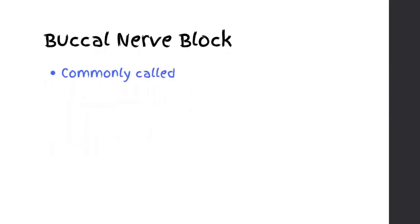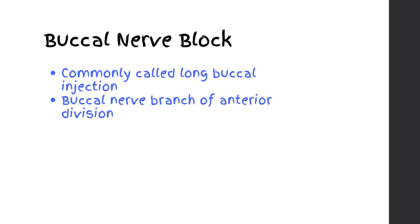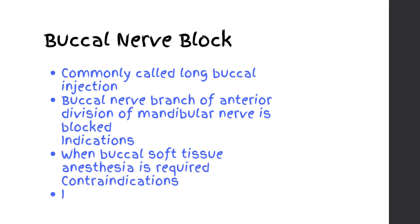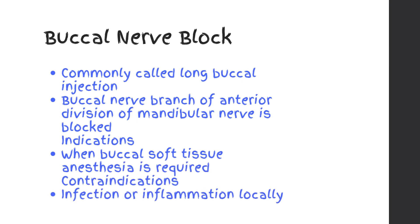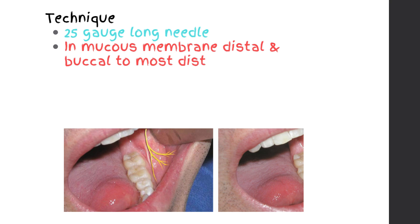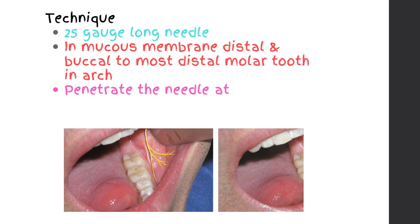Buccal Nerve Block, commonly called the long buccal injection. The buccal nerve — a branch of the anterior division of the mandibular nerve — is blocked. Indications: when buccal soft tissue anesthesia is required. Contraindications: infection or inflammation locally. Technique: 25 gauge long needle in mucous membrane distal and buccal to the most distal molar tooth in the arch. Penetrate the needle at the injection site about 2 to 4 millimeters.